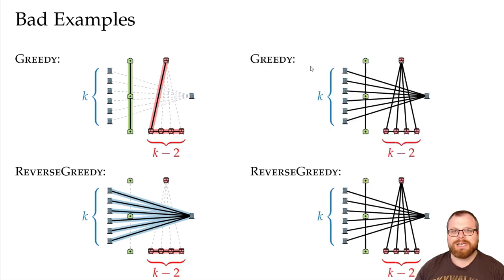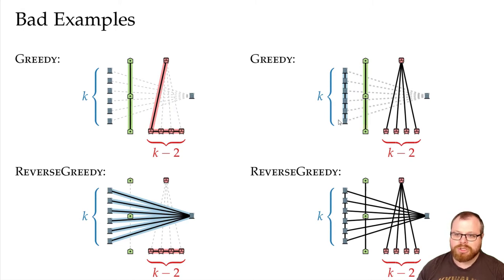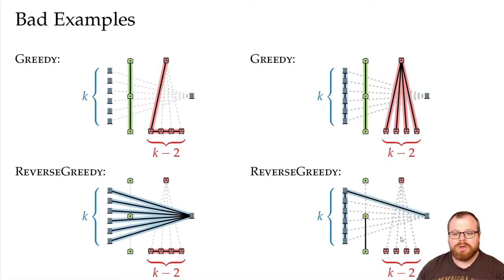On the other hand, if we slightly adjust this example, then it's the other way around. Now the greedy can pick all of the red edges and we get in total three clusters. The reverse greedy removes those red edges, so now we have one blue cluster, two green, but k minus one red. So there are examples where greedy is arbitrarily worse than reverse greedy, and examples where reverse greedy is arbitrarily worse than greedy.